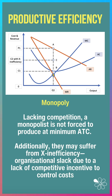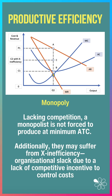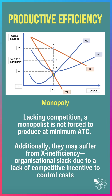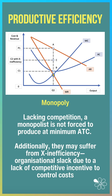Whereas with Monopoly, the absence of day-to-day competition means a monopolist is not forced to produce at minimum ATC. They're price makers, not price takers. Additionally, they may suffer from X-inefficiency — organisational slack and waste due to a lack of competitive incentives to control costs.